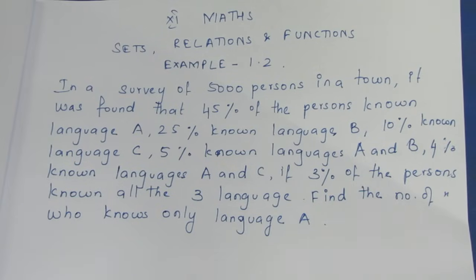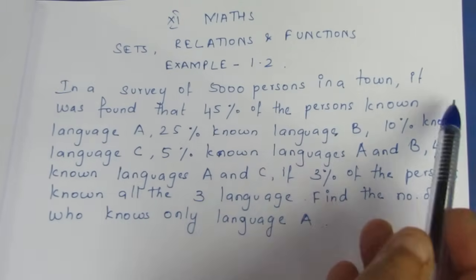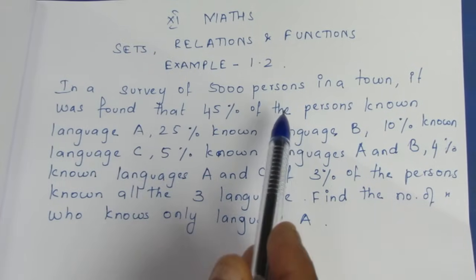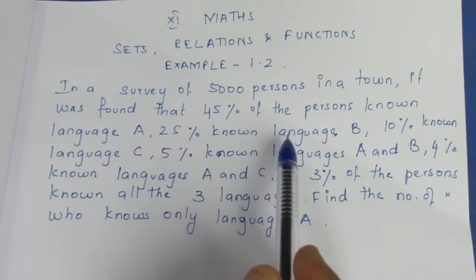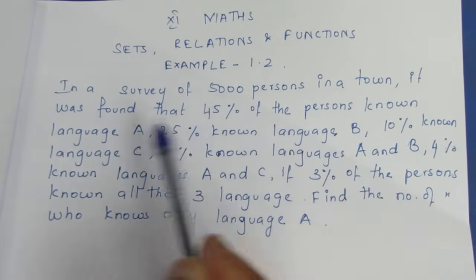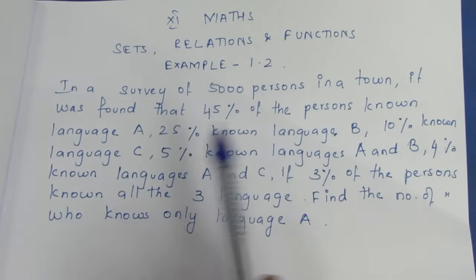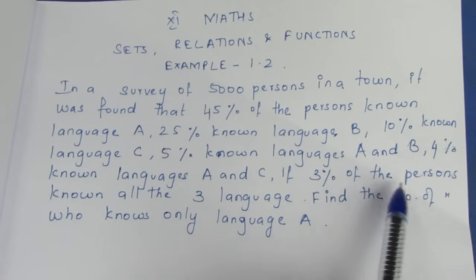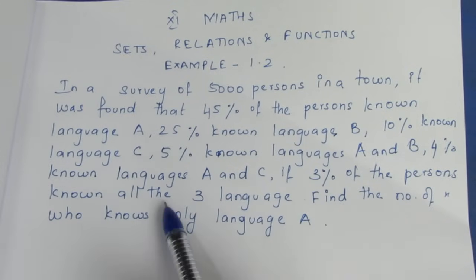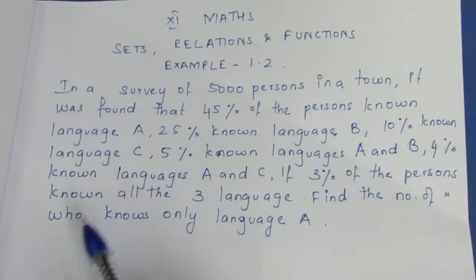In a survey of 5000 persons in a town, it was found that 45% of the persons know language A, 25% know language B, 10% know language C, 5% know language A and B, 4% know language A and C. If 3% of the persons know all 3 languages, find the number of persons who know only language A.